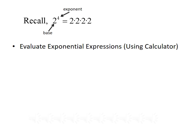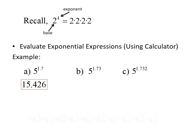We should be able to evaluate exponential expressions using a calculator. Let's look at an example. We want to evaluate 5 raised to the 1.7 power, 5 raised to the 1.73 power, and 5 raised to the 1.732 power. Typically, you put in your base first — we would type in 5 — then push whichever key does your exponent, usually a key that says x raised to the y power, or the caret key, shift 6 on a typical keyboard. So we type in 5 raised to the 1.7, and when we press enter, we get 15.426.